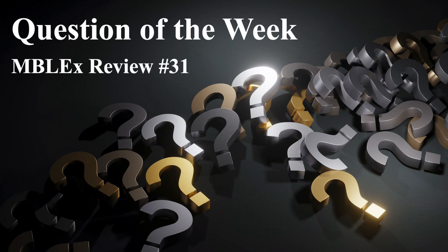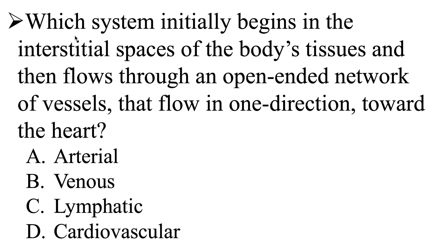Question of the week in Black's Review number 31. Our question is: which system initially begins in the interstitial spaces of the body's tissues and then flows through an open-ended network of vessels that flow in one direction toward the heart? Is it going to be A, arterial; B, venous; C, lymphatic; or D, cardiovascular?